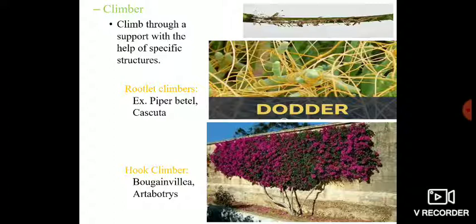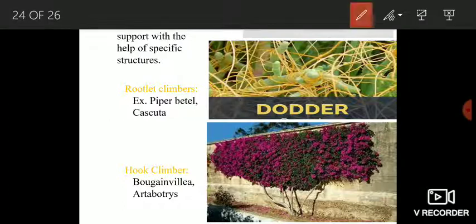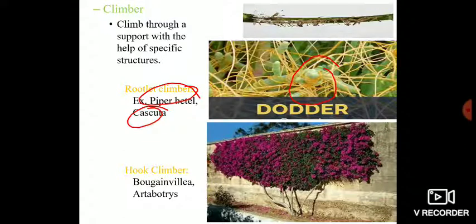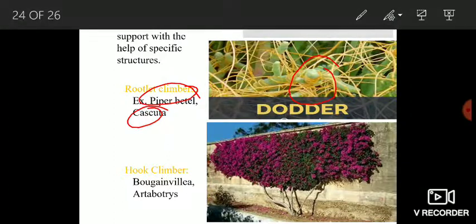One more category of weak stems is climbers — plants which climb through a support with the help of specific structures. The difference between a twiner and a climber is that in twiners you do not have specific structures meant for climbing, while in climbers you do. There are different types of climbers. First, rootlet climbers — those plants which climb through a support with the help of small rootlets. Examples are Piper betle and Cuscuta, which produce small rootlets that help them to climb.